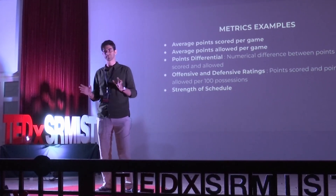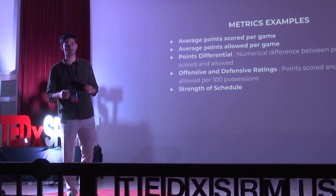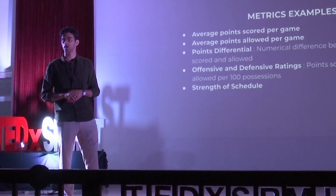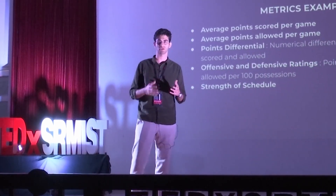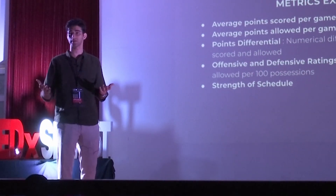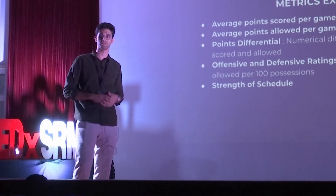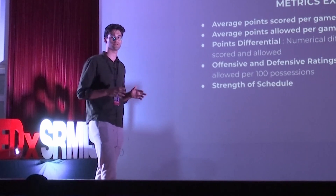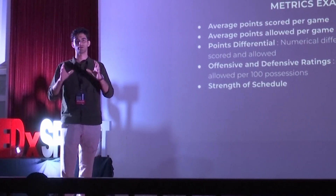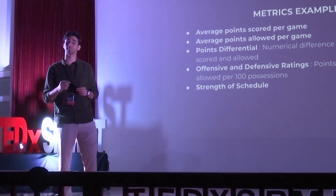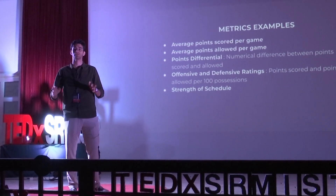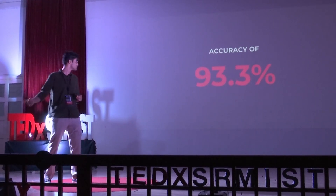Once the data was complete and processed, we moved to the machine learning part. Machine learning is a growing field of technology that helps you predict or classify data based on past observations. Using multiple mathematical and machine learning models, we built a single unit of prediction that predicts the win percentage of every team across a whole season with an outstanding accuracy of 93.3%.